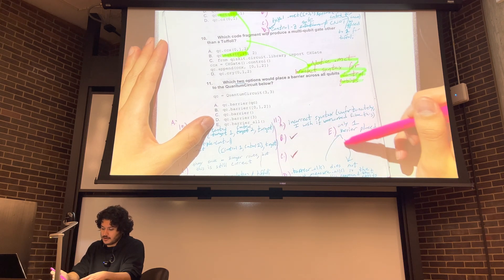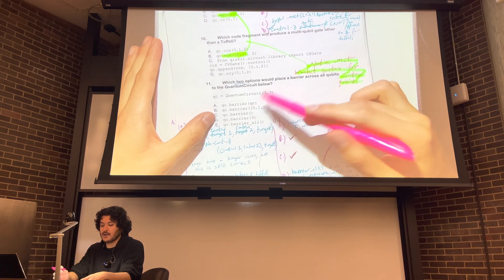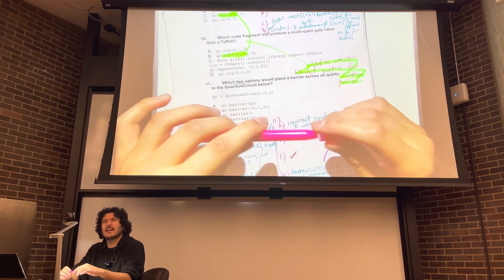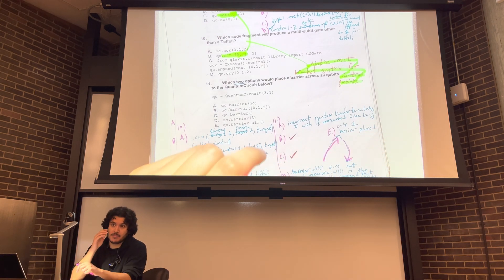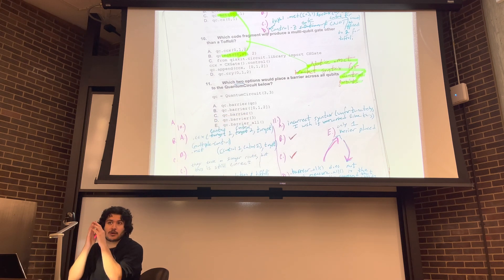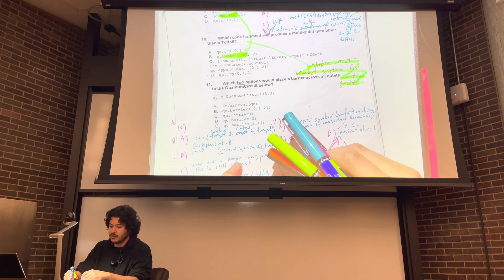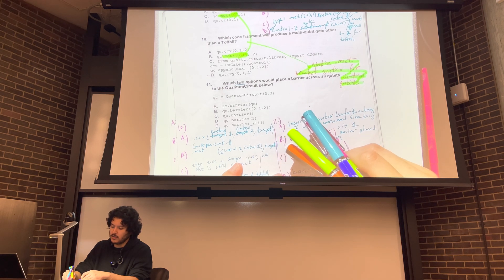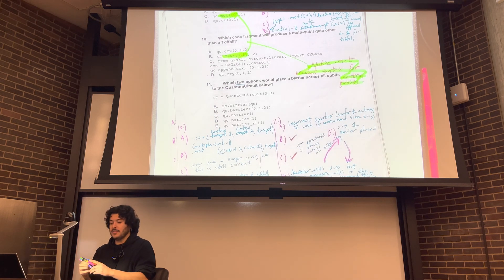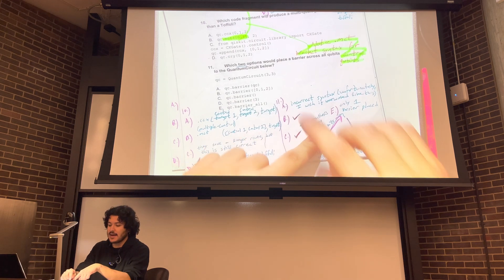So option D only places one barrier. Option C: qc.barrier() is correct because dot barrier with an empty set of parentheses places it across all of them. I didn't put the justification there, but open parentheses places it across all bits. That is why option C is correct.